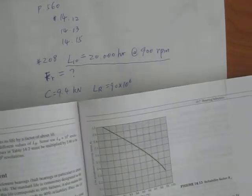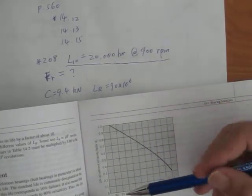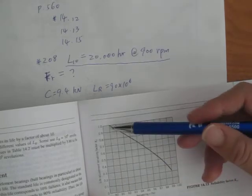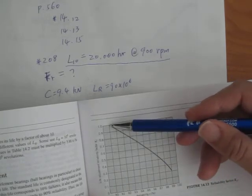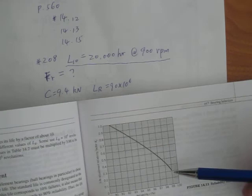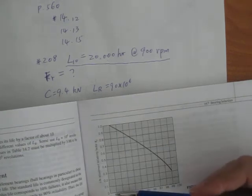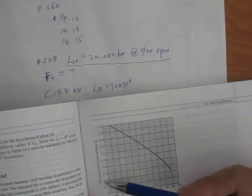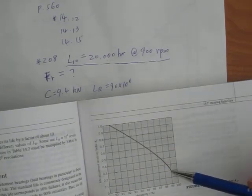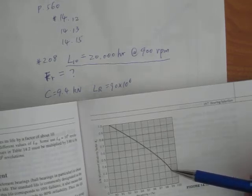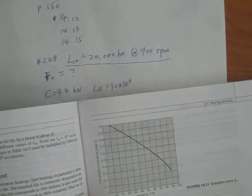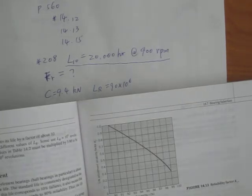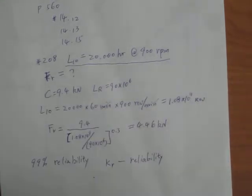You have this chart here. This 90 times 10 to the 6, you have one, KR equal to one. And if you want to have 99% instead of 90%, then KR is equal to 0.2. Certainly this curve is gonna drop. If you want 100%, probably KR is a really really small number over there.